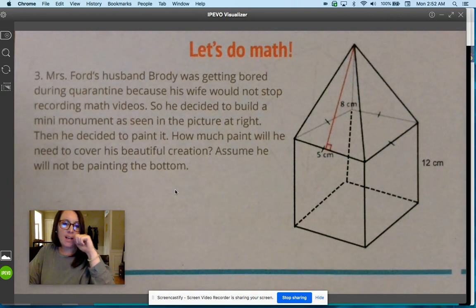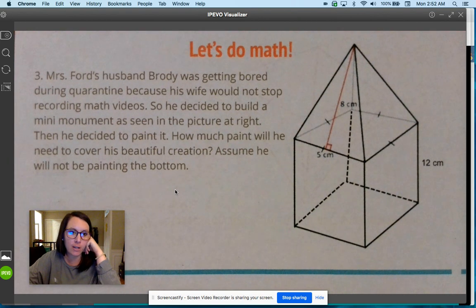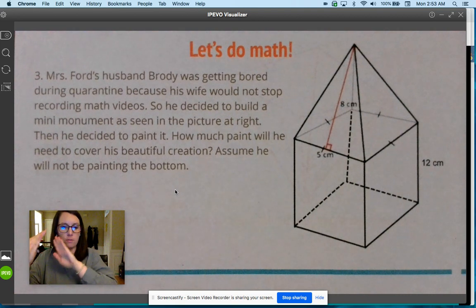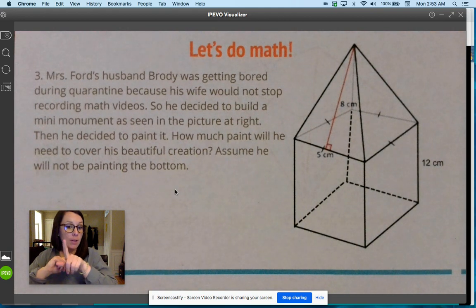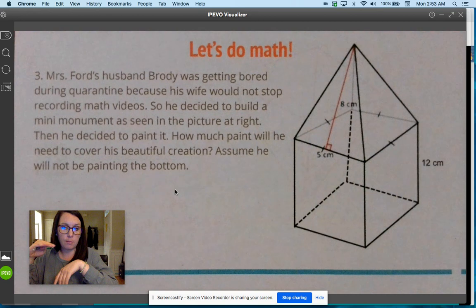Mrs. Ford's husband Brody was getting bored during quarantine because his wife would not stop recording math videos, so he decided to build a mini monument as seen in the picture at the right. Then he decided to paint it. How much paint will he need to cover his beautiful creation? Assume he will not be painting the bottom. First we have the triangle sides, but then we also have our rectangular prism.